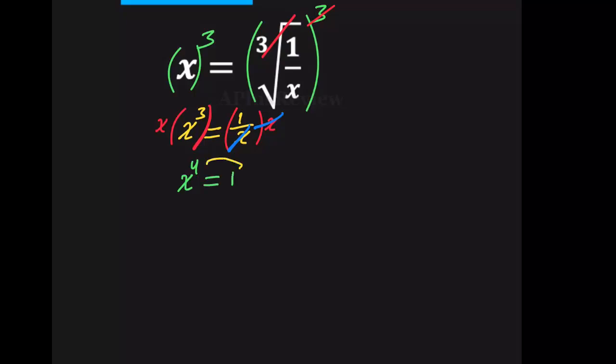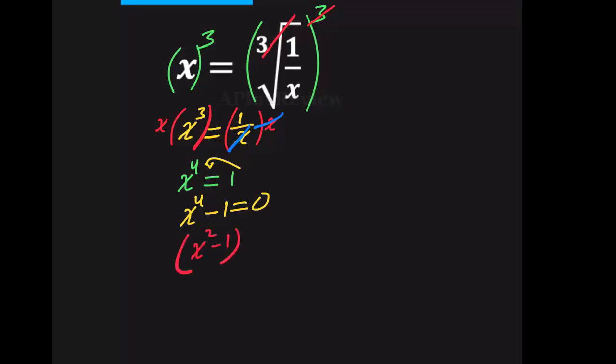We're going to take this over to the left side, so we're going to have x to the power of 4 minus 1 is equal 0. Now we can factor, and we're going to have x squared minus 1 and x squared plus 1.